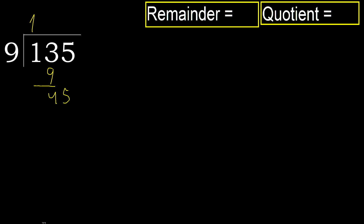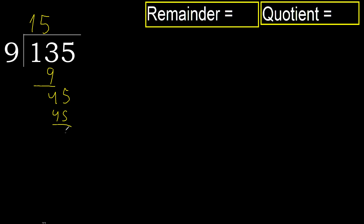45. 9 multiplied by 5 is 45 — 45 is not greater. 45 minus 45 is 0. Next.